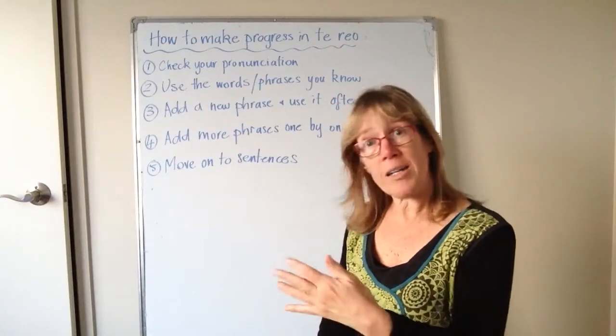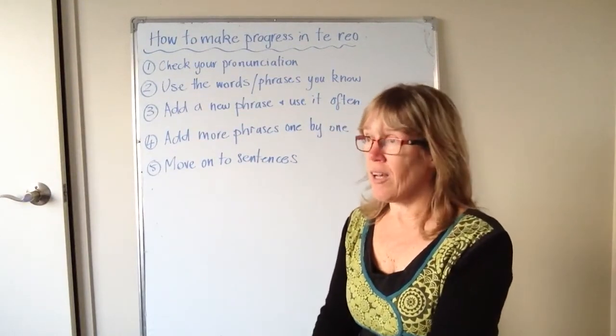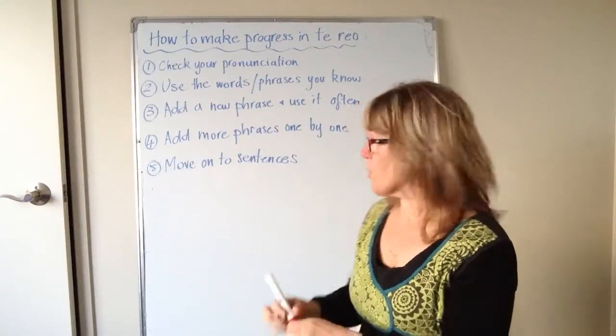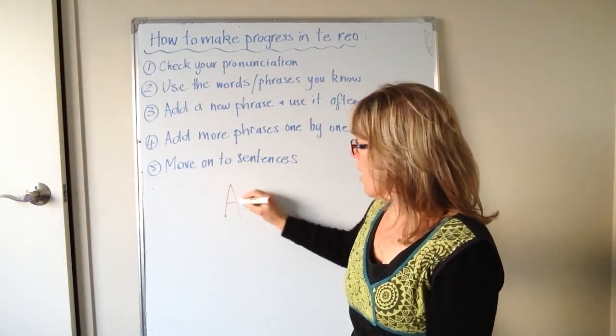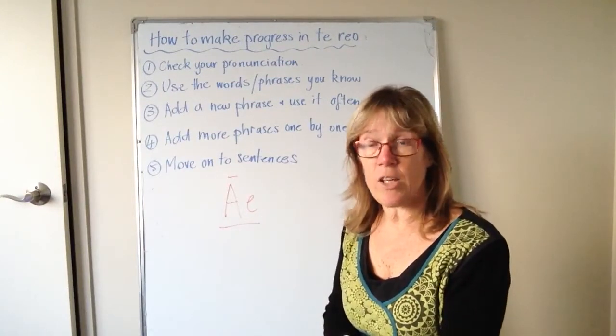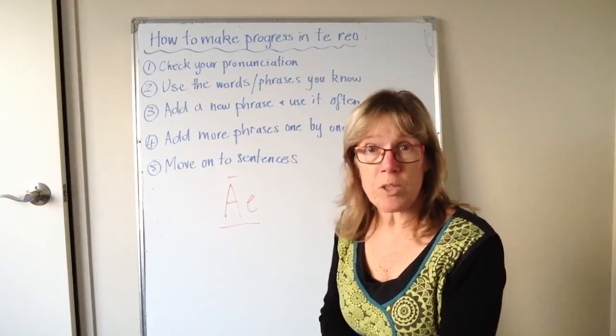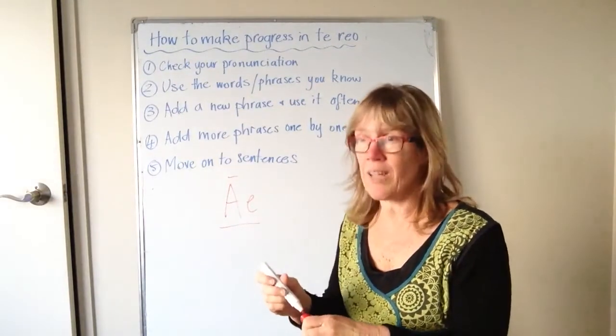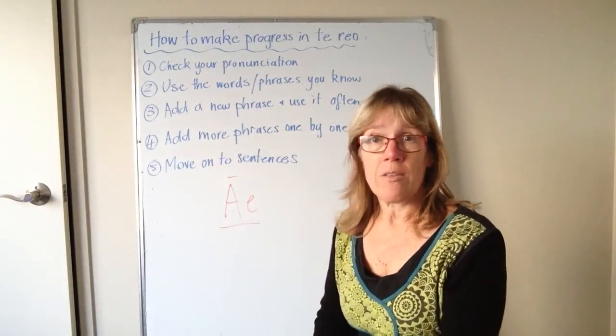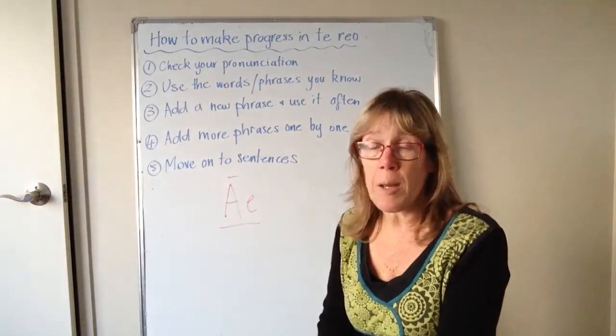Haere mai. Nau mai, haere mai. Kia ora. And āe for yes. Āe is yes in te reo, and that's another one that I use a lot as well. Nobody ever questions me. They know what I mean when I say that. And so you will have your own ones that you know. It might be to do with colours or numbers.